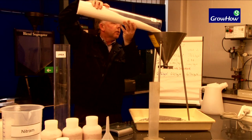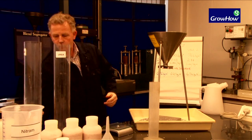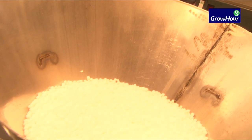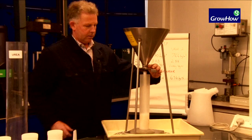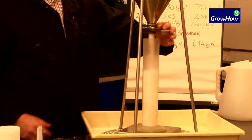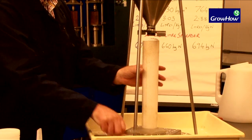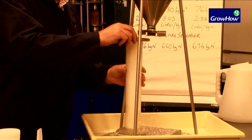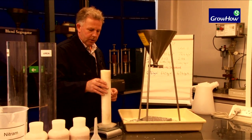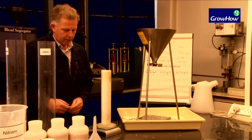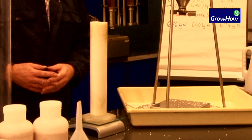I'll pour the product into the top hopper and then get my litre cylinder and fill it with nitram. Level up the top, measure my litre volume, and that comes out at 982 kilograms per cubic metre.